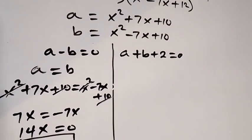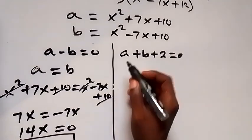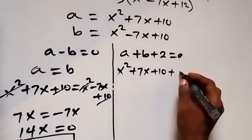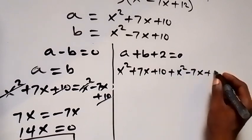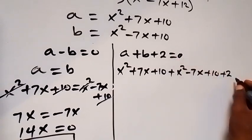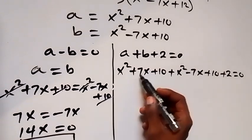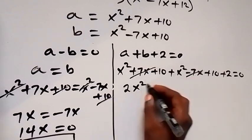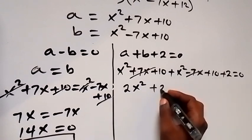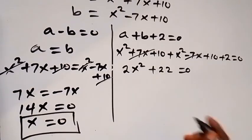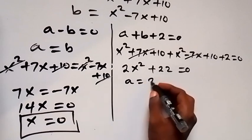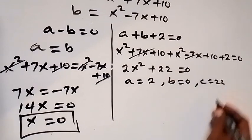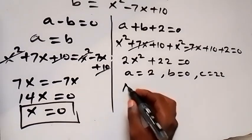Case 2: a + b + 2 = 0. Substituting: (x² + 7x + 10) + (x² − 7x + 10) + 2 = 0. The 7x terms cancel, giving 2x² + 22 = 0. This is a quadratic with coefficients a=2, b=0, c=22.